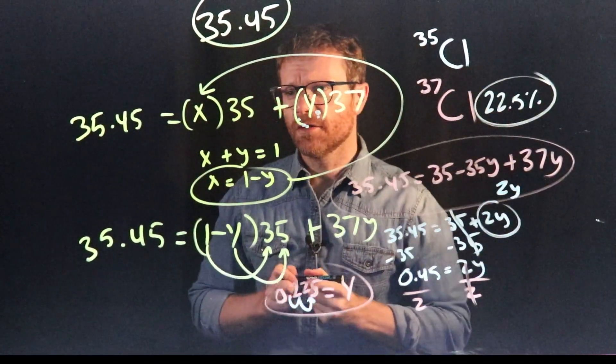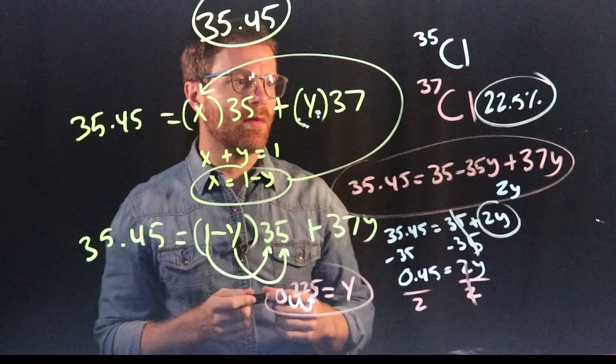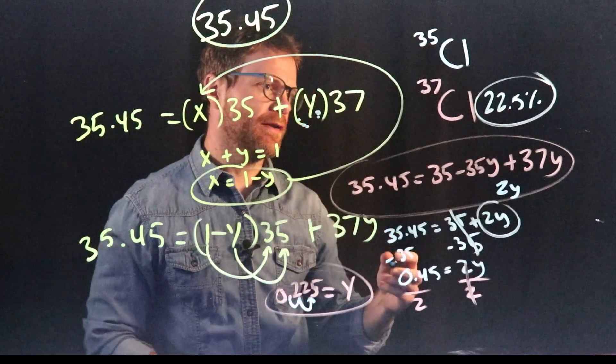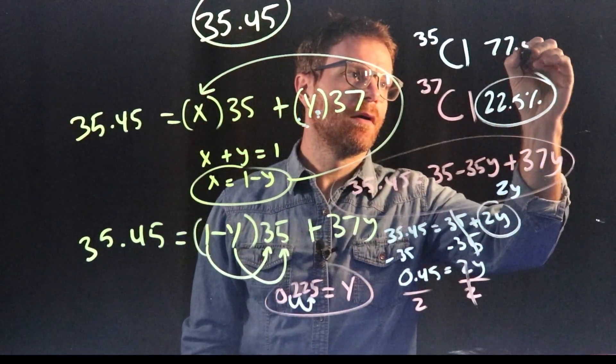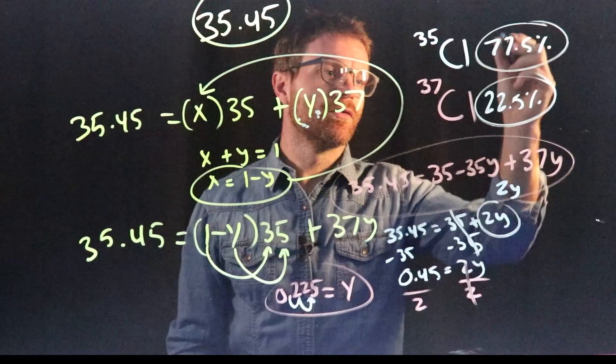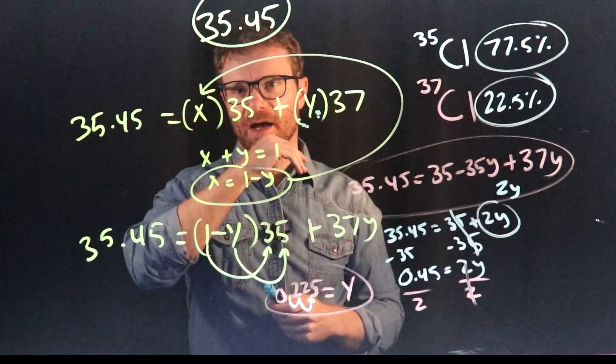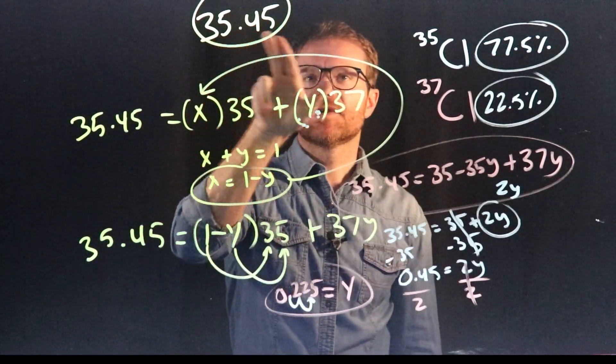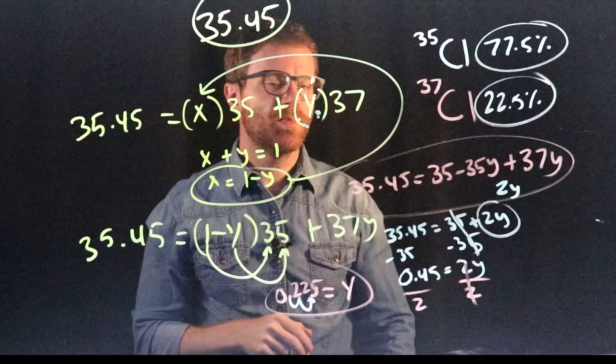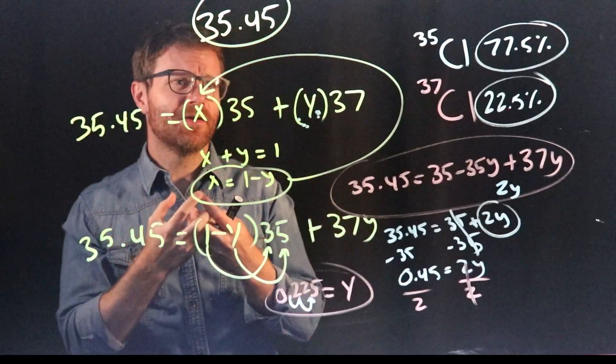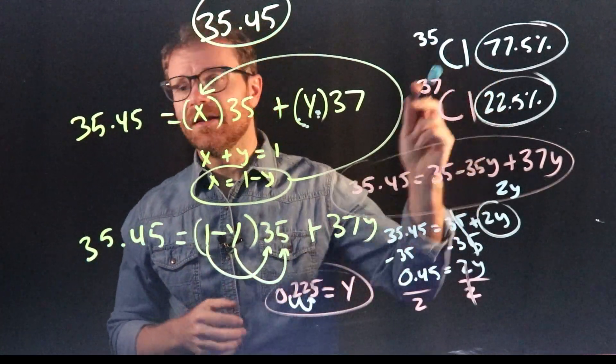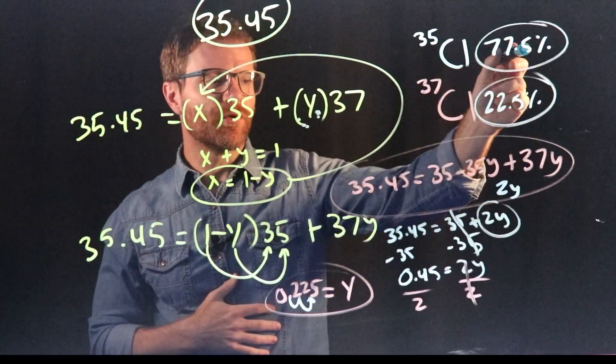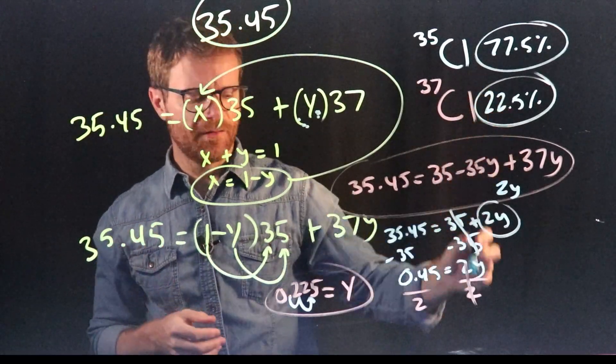How do we figure out chlorine 35? Well, that is a very simple arithmetic problem. These two need to add up to 100. So 100 minus 22.5 is 77.5. Which is pretty close to my estimates at the beginning of this problem. Again, we look at this number 35.45. That number is a lot closer to 35 than it is to 37. So we expect most of the chlorine out there in the world to be chlorine 35. And indeed, that's what we found. About three quarters of the chlorine in the world is 77.5. And about one quarter is 22.5.